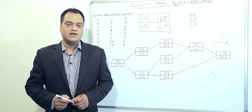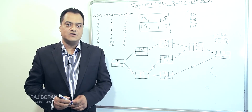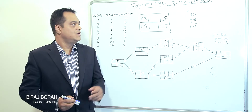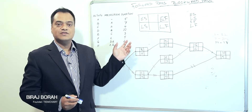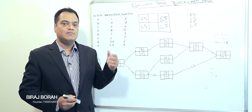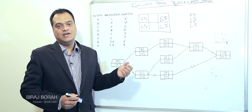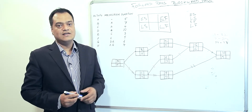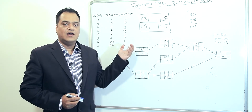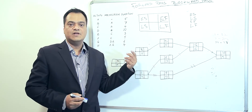Hi, this is Viraj, founder of TimeChart project management software. Today let us look into this topic: forward pass and backward pass, and how do we calculate slack or free float in order to find the optimal network.